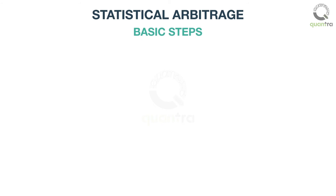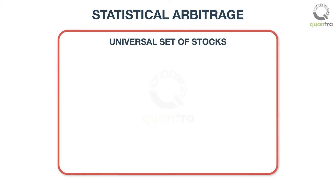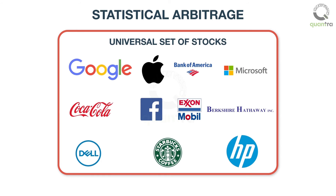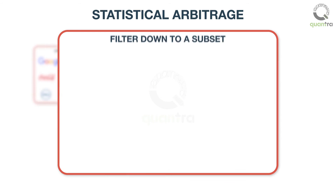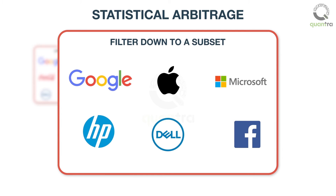We will now discuss the basic steps in implementing a Stat-Arb strategy on a universe of stocks. We start with a universal set of stocks — consider all the stocks being traded on the exchange. We then filter down to a subset by carefully matching them by region and sector. Co-integrated stocks are identified to take advantage of the temporary widening of spread. Co-integration will be discussed in detail in the next section.